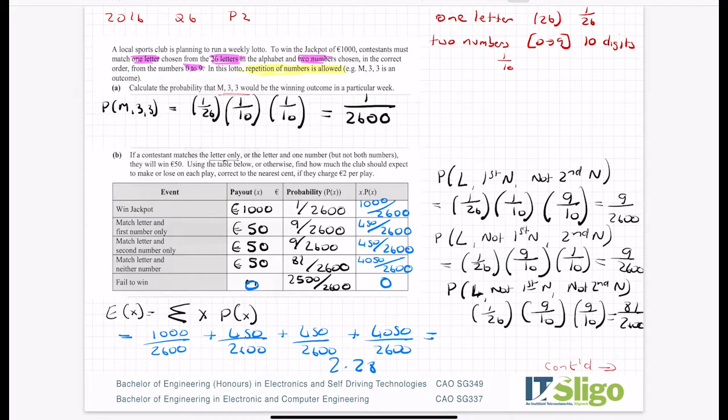So what? What does that mean then? That means that this particular company hasn't designed the best lotto. This sports club is going to lose money. Why? Because they're actually only charging you 2 euros to play the game, yet on average they're paying out 2.28 euros. So for every game that's played, they will lose 28 cents. Let me come up and read the question: find how much the club should expect to make or lose on each play correct to the nearest cent. So 2.28 minus that 2 euros, so 0.28 loss is the answer to that question.